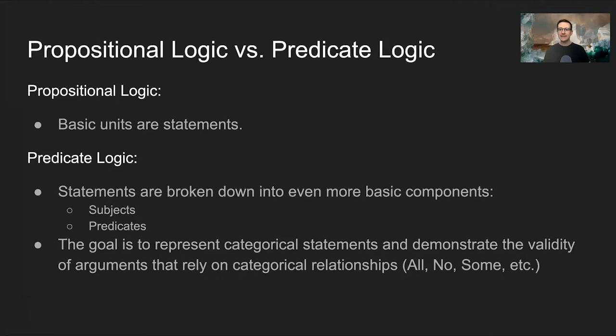For any given statement — this is like basic grammar 101 — statements consist of two parts: a subject and a predicate. A subject is the subject of the statement, and the predicate is what you're claiming is true about that statement. So in predicate logic, the goal is to represent categorical statements and demonstrate the validity of arguments that rely on categorical relationships.